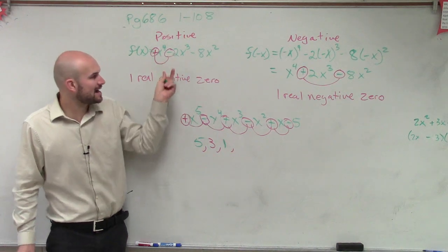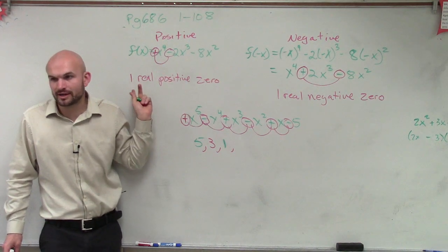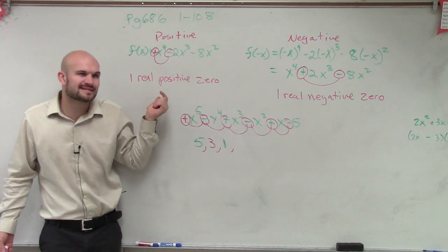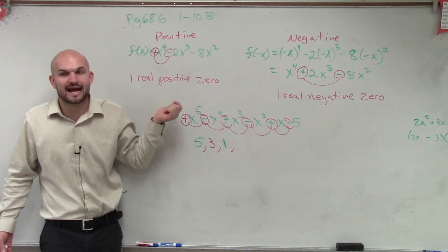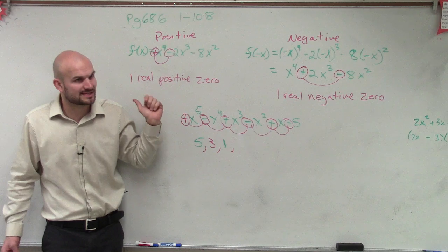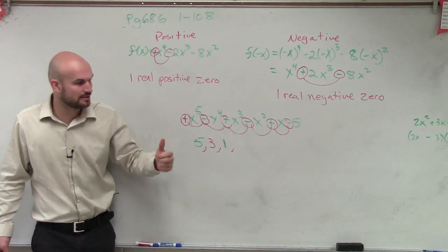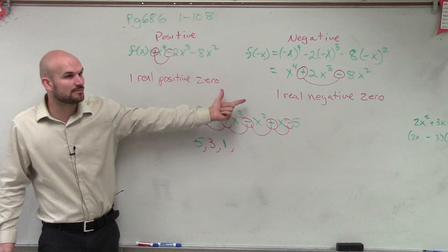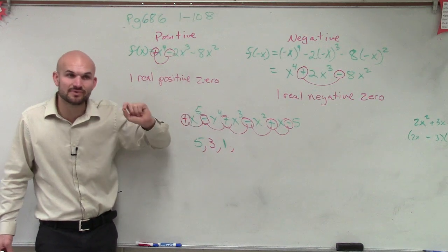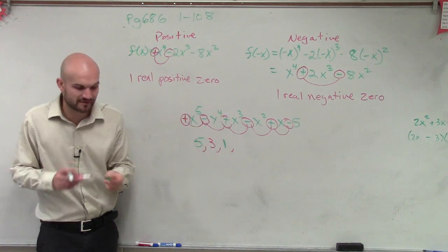But you can't subtract an even number from one, because it doesn't make sense to have negative zeros. A negative amount of zeros, that doesn't make sense. So what you need to remember is you always count the number of zeros. That's the term of possibilities, but then you have to subtract an even number.